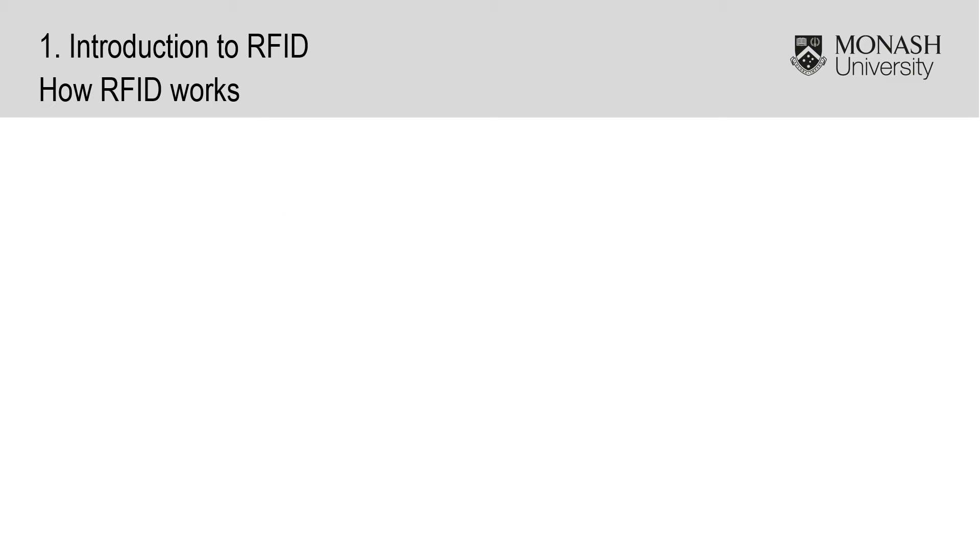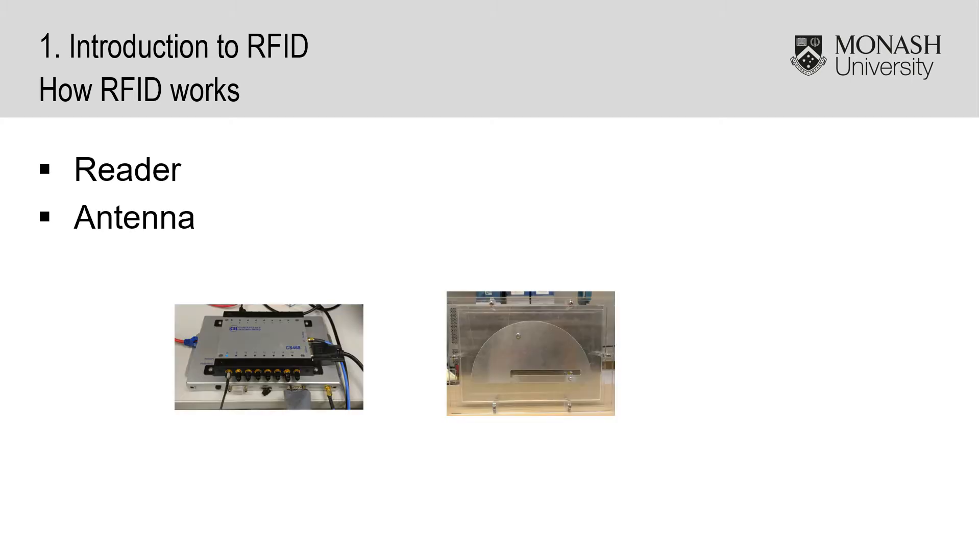In an RFID system there are three main parts: the reader, the antenna, and the tag.